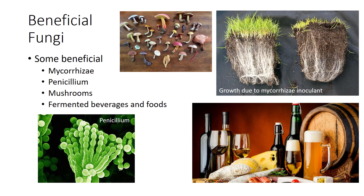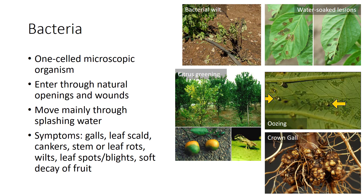Bacteria do not cause many economically important diseases in horticultural crops. In some cases, they can even be beneficial — for example, the symbiosis of rhizobia in legumes promotes the fixation of nitrogen in host plant roots. However, in a number of cases, bacteria cause problems. Bacteria are one-celled microscopic organisms that may divide every 20 to 30 minutes. They may be found in soil, in plants that are breaking down, in insects, and in or on plant parts. They get into plants through natural openings or wounds and move mainly through splashing water, plant management or pruning, insects, and seeds.